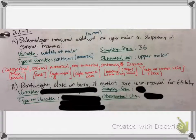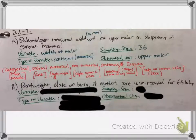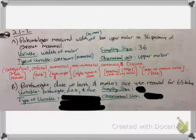Next example: birth weight, date of birth, and mother's race were recorded for 65 babies. What's the variable? What changes for each of the 65 babies? Well, birth weight, date of birth, and race — those would all change, right? Those would all be different depending on the individual that is studied. How many were studied? 65.